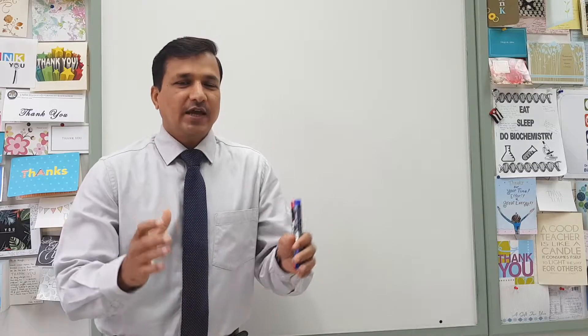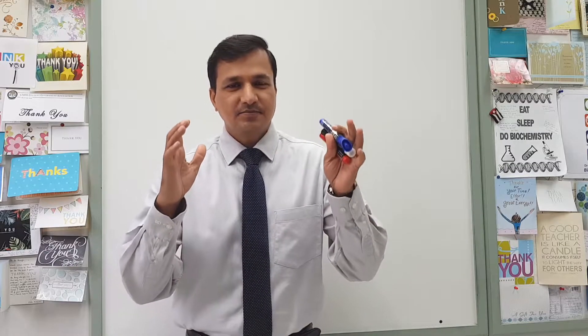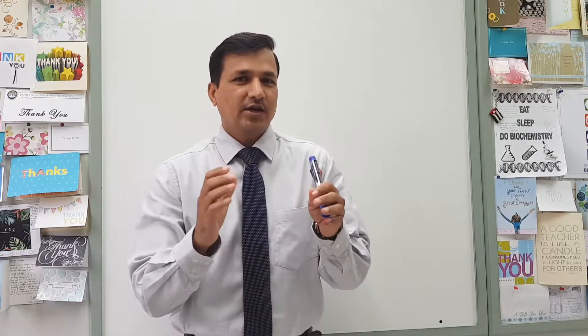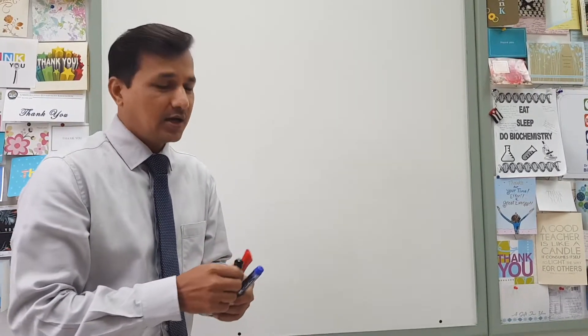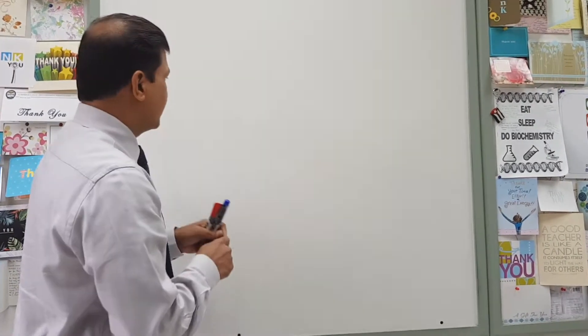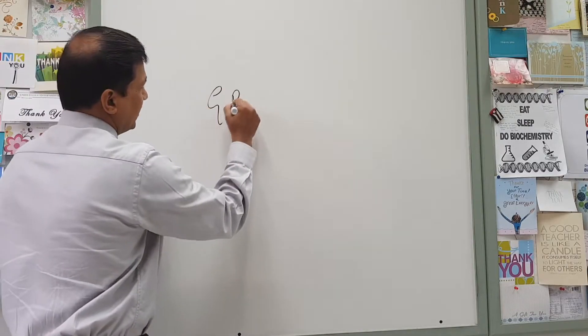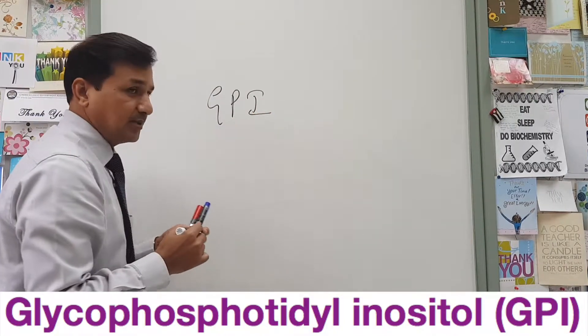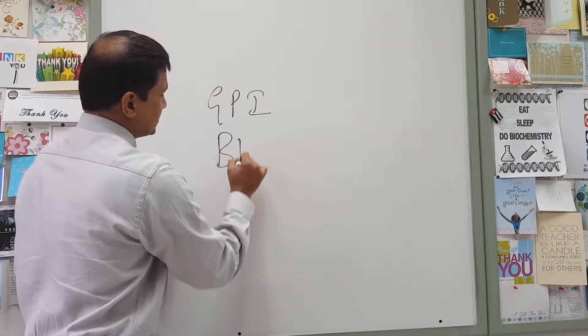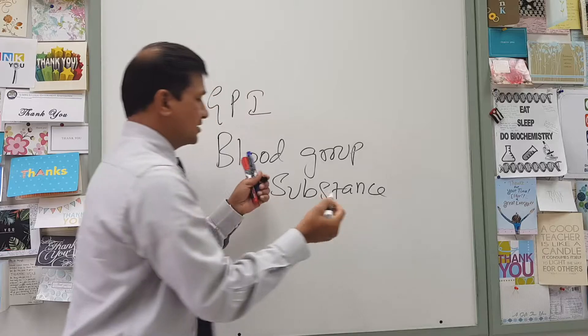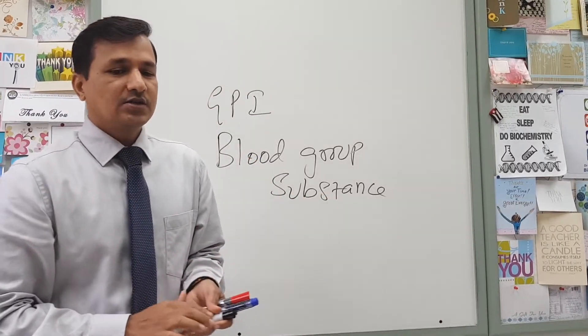As you know, glycolipids are the carbohydrate-containing lipid molecules. The examples for glycolipids I would like to explain here are GPI — that is glycophosphatidylinositol — and another example for glycolipid is blood group substances.